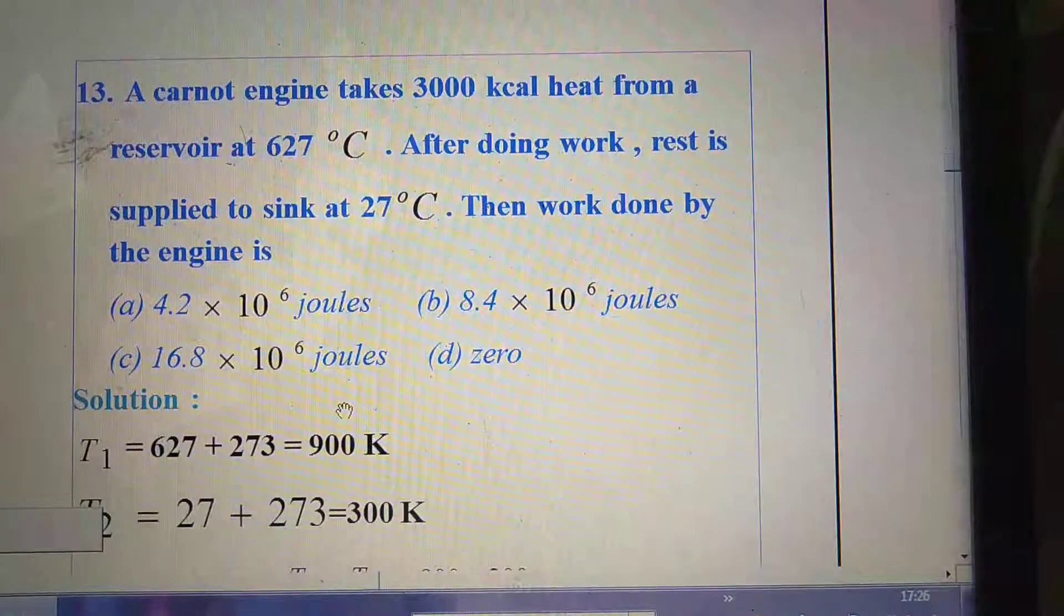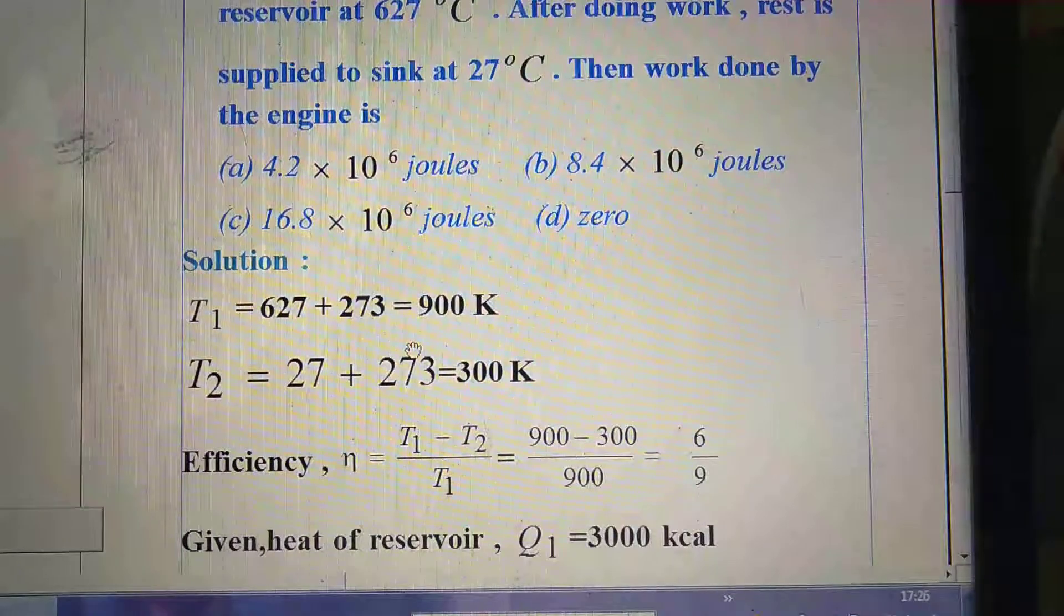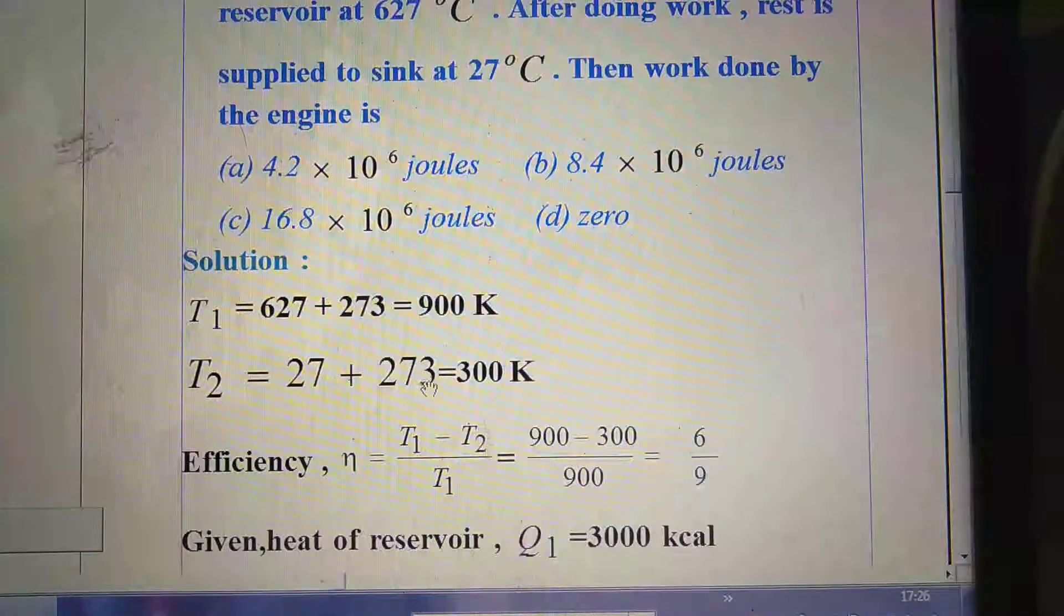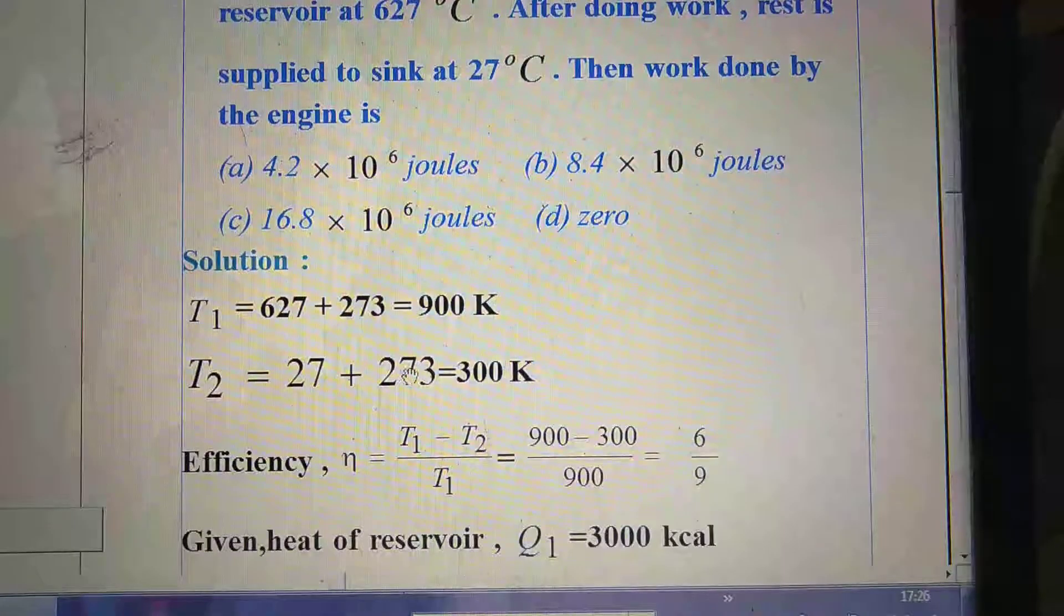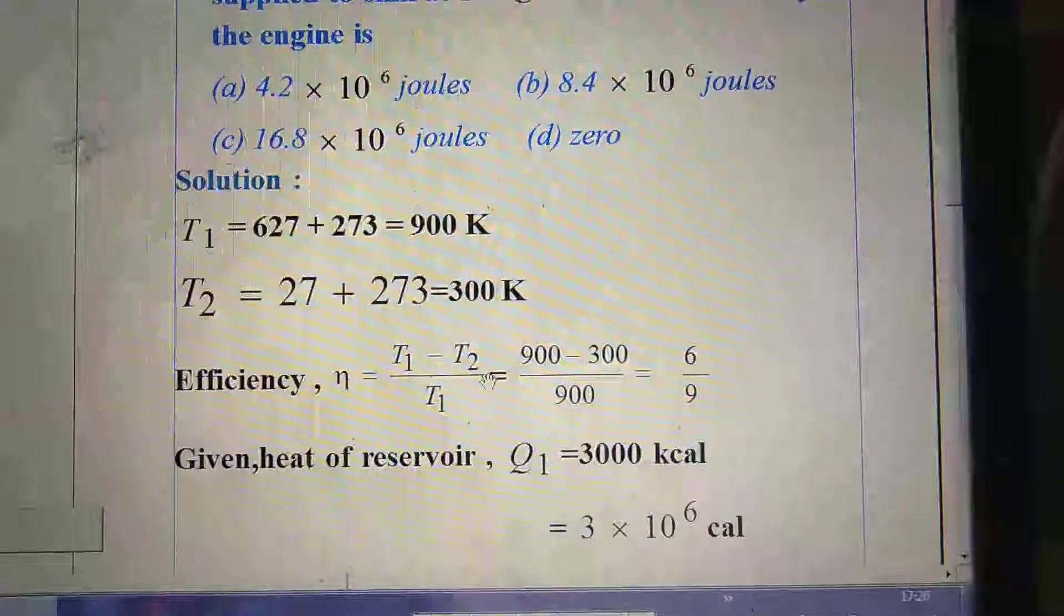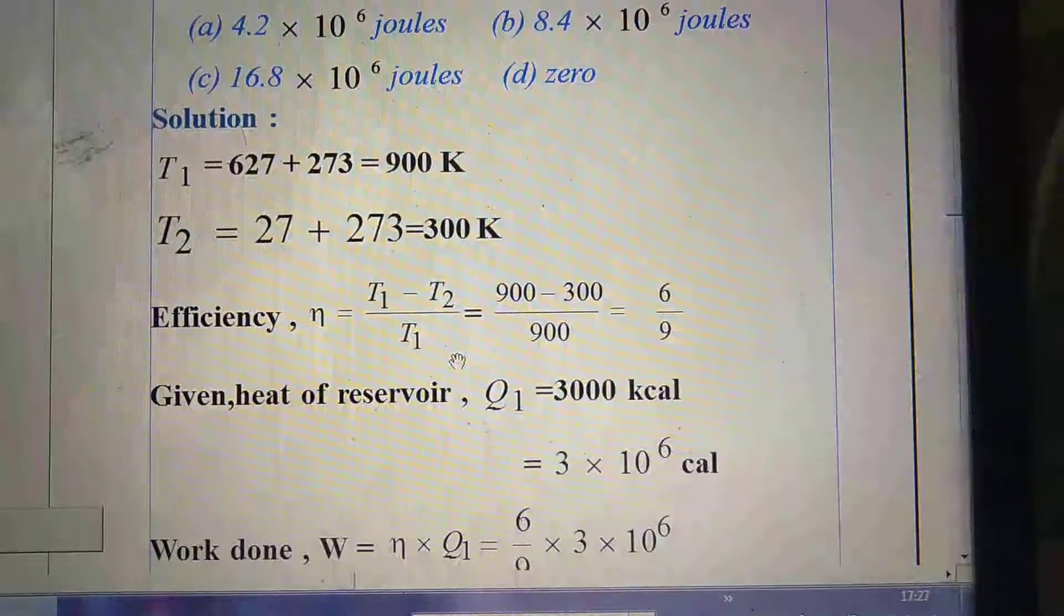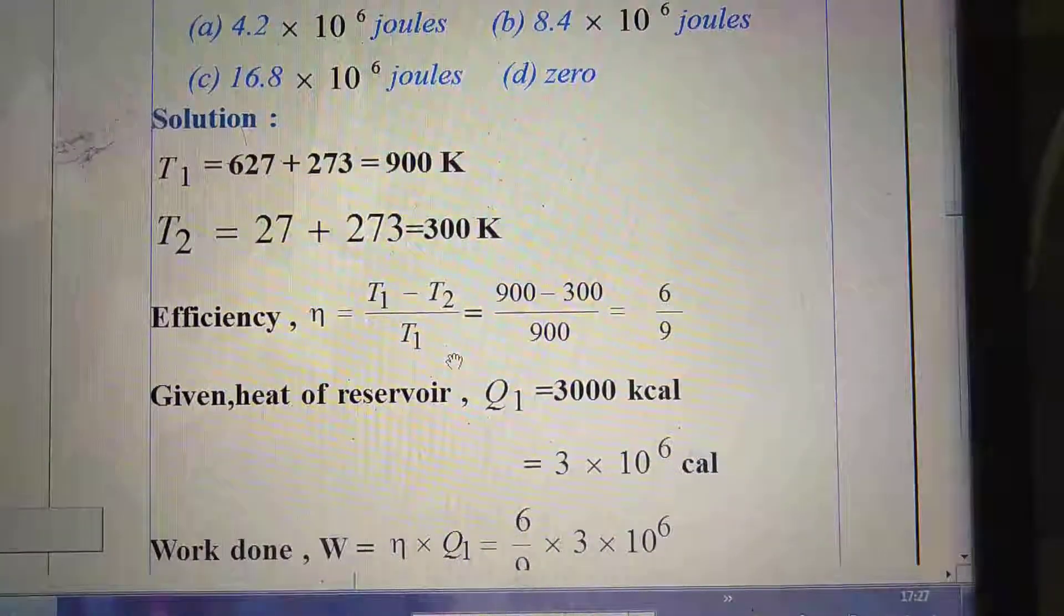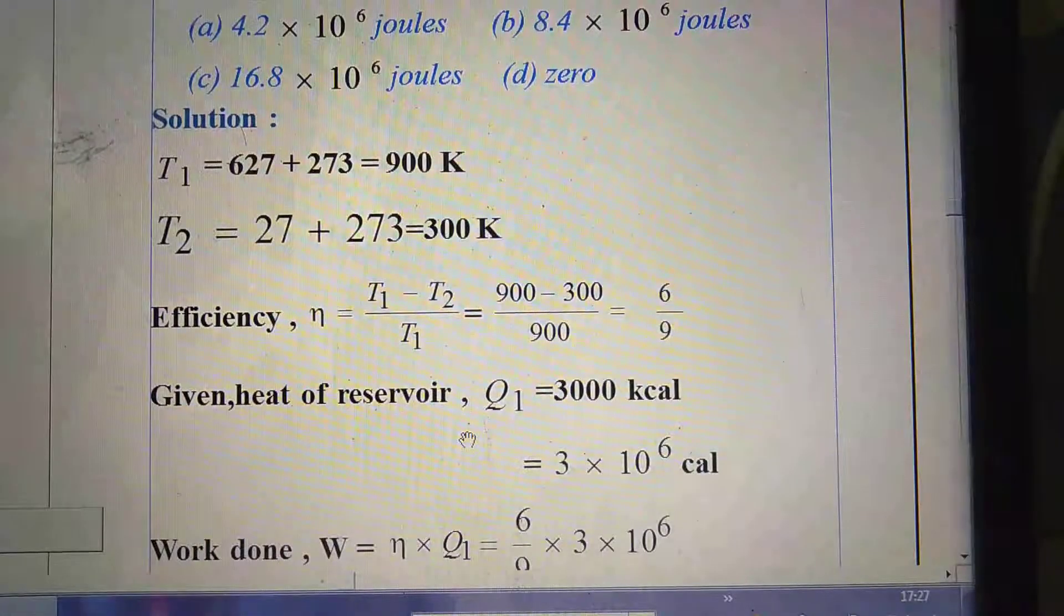So how can you solve this one? First you have to convert the temperature into Kelvin. So we are given T₁ = 627 + 273 = 900 Kelvin, T₂ = 300 Kelvin. T₁ is the temperature of the source and T₂ is the temperature of the reservoir. Then you have to find out the value of efficiency. What is the formula of efficiency? η = (T₁ - T₂) / T₁. Insert the value of T₁ and T₂. After calculation, we got efficiency as 6/9.